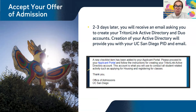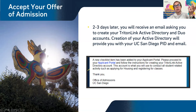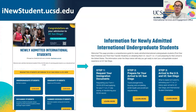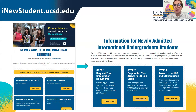Once you accept your offer of admission, about two to three business days later you will receive an email asking you to create your TritonLink Active Directory and Duo accounts. Your Active Directory will activate your student PID — your personal identification number — as well as your email. These are critical; this is how we communicate with you, primarily using your UCSD email. It's also what you'll use to apply for your Form I-20 or DS-2019 for your F-1 or J-1 visa.